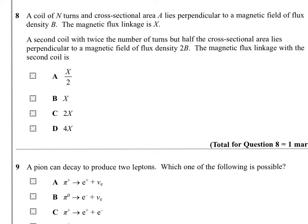Question 8, a coil of N turns and cross-sectional area A lies perpendicular to a magnetic field of flux density B. The magnetic flux linkage is X. A second coil with twice the number of turns but half the cross-sectional area lies perpendicular to a magnetic field of flux density 2B. The magnetic flux linkage with the second coil is how much?